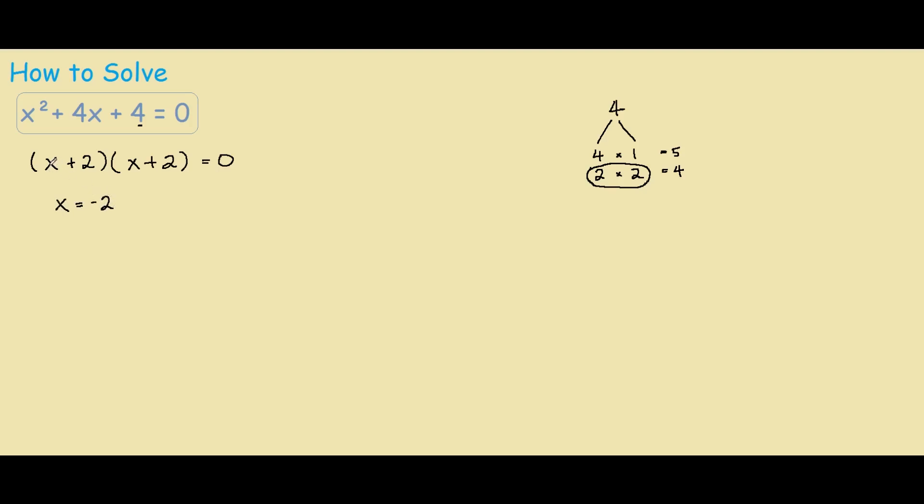Because negative 2 plus 2 is 0, so 0 times this bracket equals 0. And for our bracket, we also have x equals negative 2, so in this case we only have one solution.